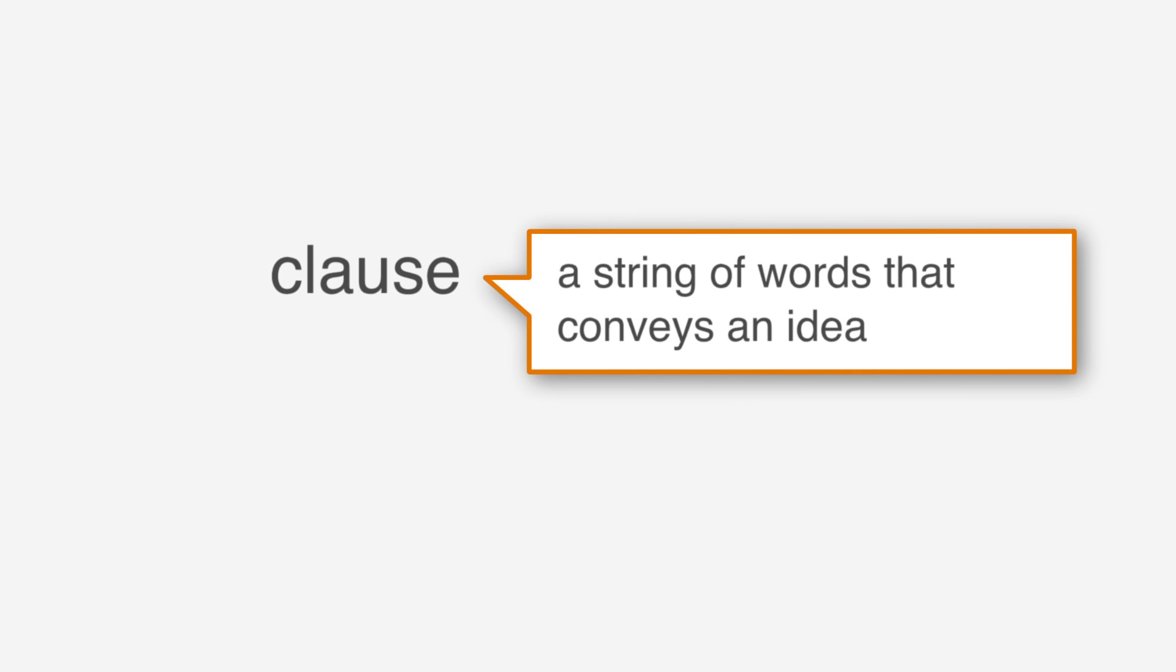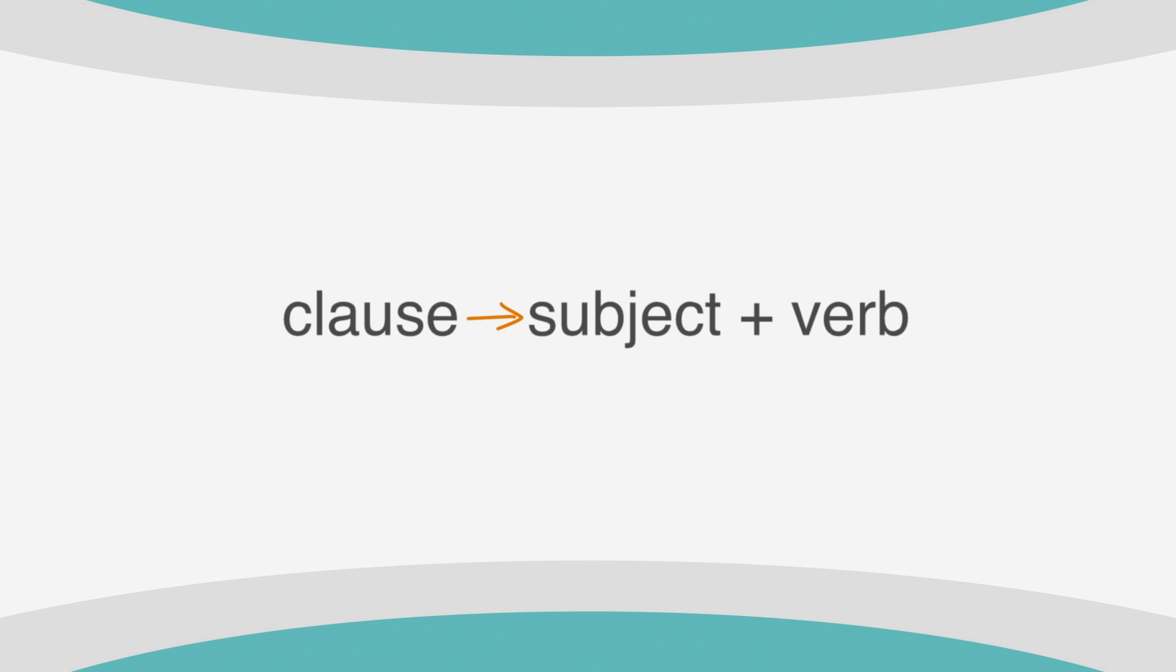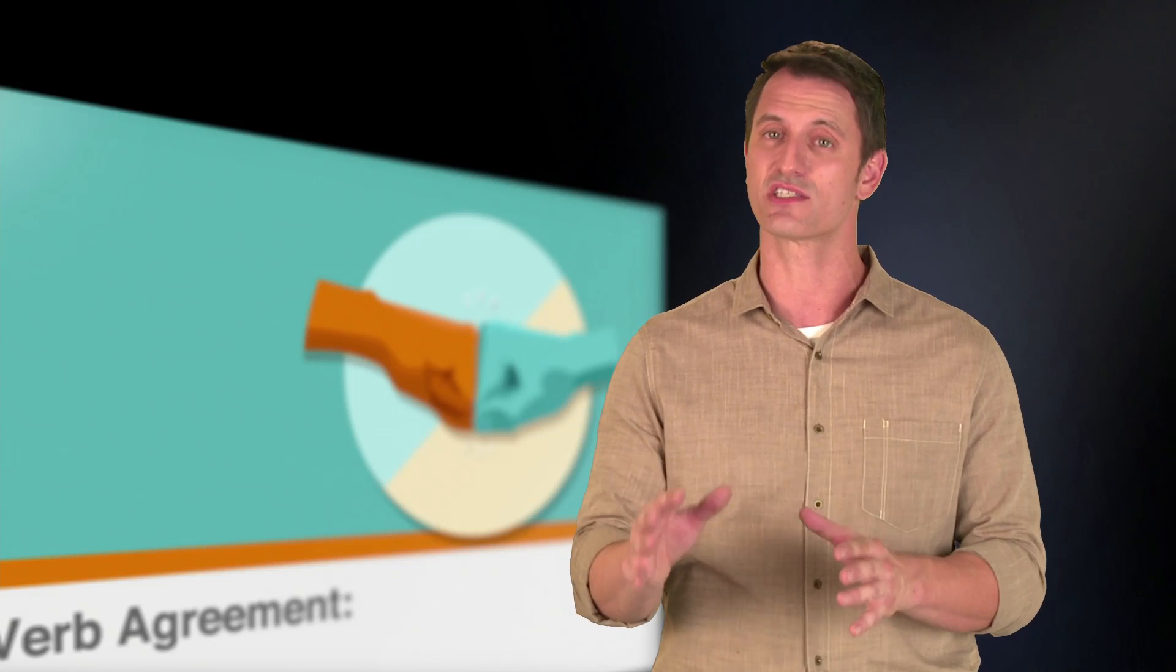Let's start with a review. A clause is a string of words that conveys an idea. Whether dependent or independent, every clause must contain a subject and a verb. The SAT will test your ability to differentiate between correct and incorrect subject and verb pairs. This sounds simple, but other parts of a sentence can interfere with the subject-verb agreement.